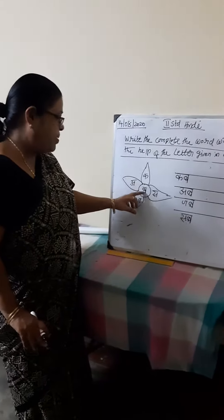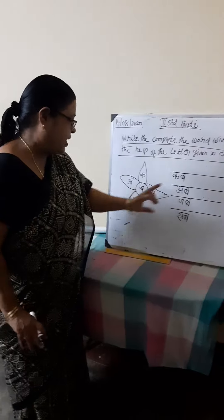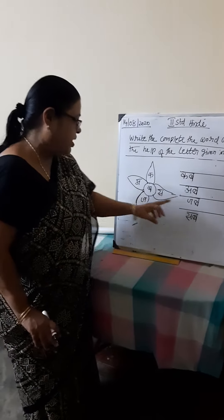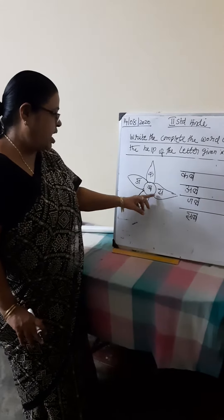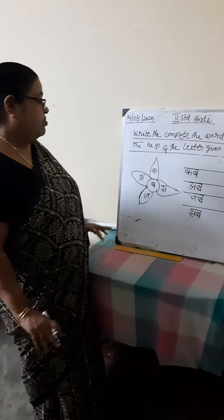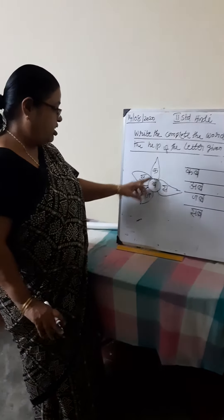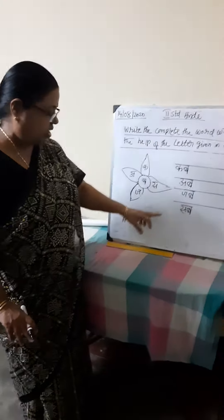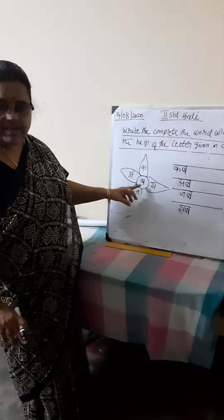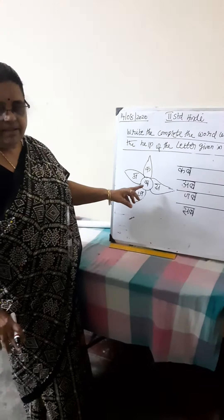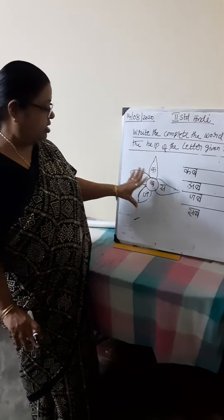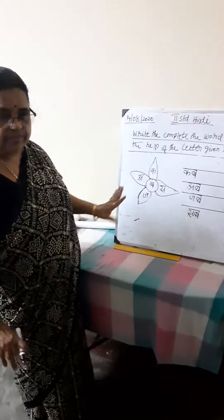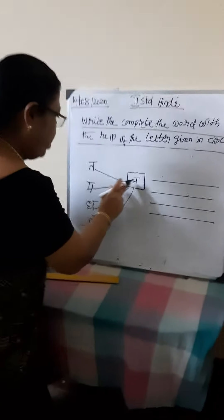Now again I repeat: Ka-ba-cabba. A-ba-abba. Jabba-jabba. Sabba-sabba. We join these two letters. Now we get one new word. Did you understand? Yes.